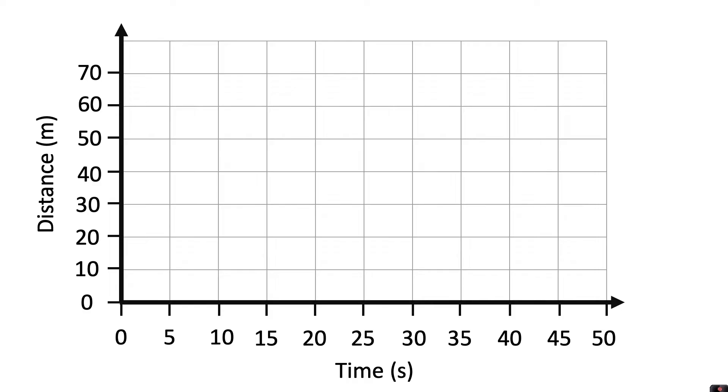If you were to record how far an object travelled in a certain amount of time, you'd then plot it on your graph. For example, in this first stage the object may have travelled 40 meters in the first 10 seconds.